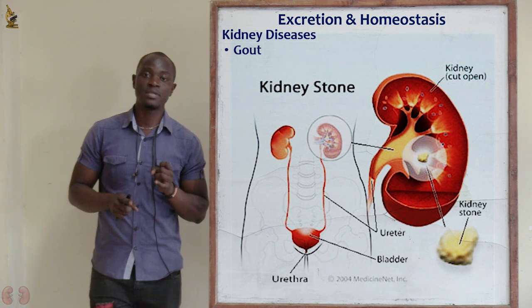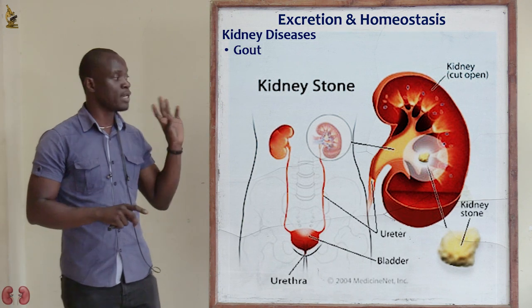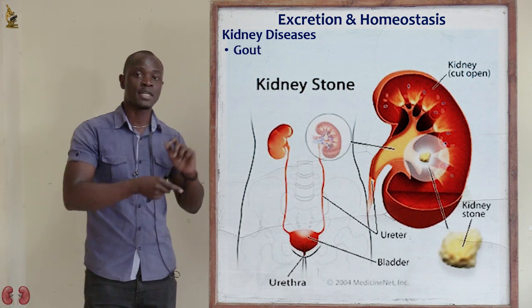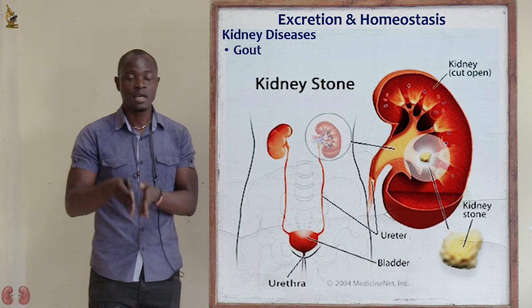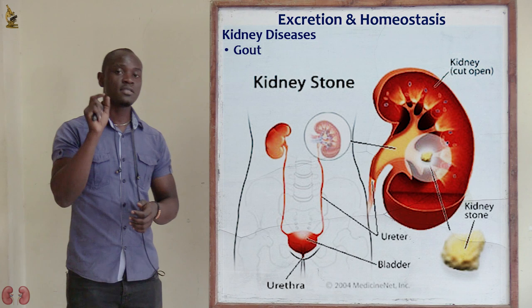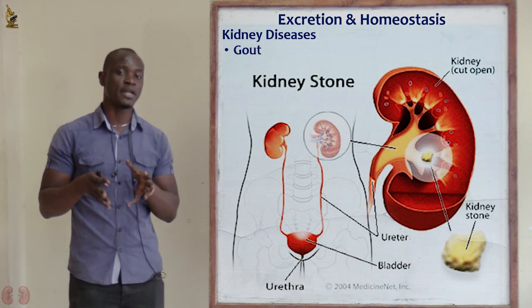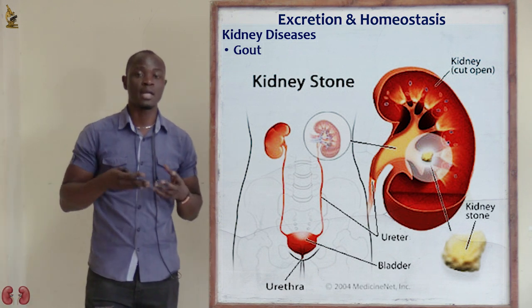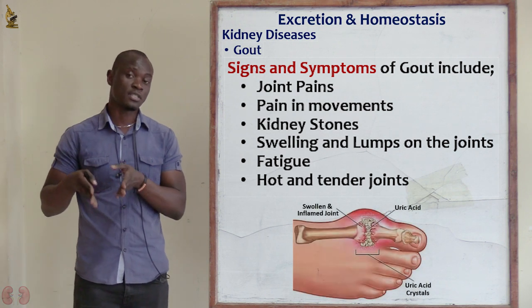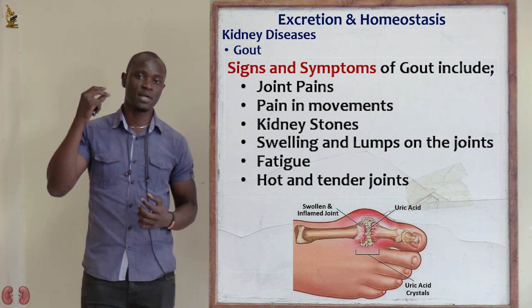Kidney stones are stone-like structures made up of calcium deposited on the pelvis of the kidney. The kidney has three major parts: the cortex, the medulla, and the pelvis. Urine passes from the medulla into the pelvis, which takes it to the ureter, then the bladder, then the urethra, and finally out of the body. These stones may block the pelvis, making urine passage impossible, leading to high pressure inside the kidney, which may cause rupture and kidney failure. So gout leads to kidney stones, kidney stones lead to kidney failure, and kidney failure may lead to kidney transplant.